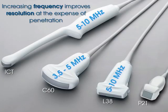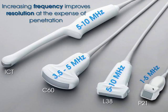Different transducers have different frequency ranges. You want to know how to toggle from, say, 5 to 10 MHz, or 3.5 to 5, or 1 to 5 MHz. Higher frequency means better resolution but less penetration. On a thin patient you'd use higher frequency; on a large patient you'd drop to 1 MHz. You always want to use the highest possible frequency that can still penetrate to the depth of interest.